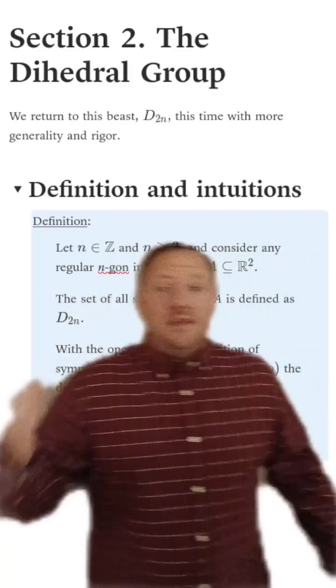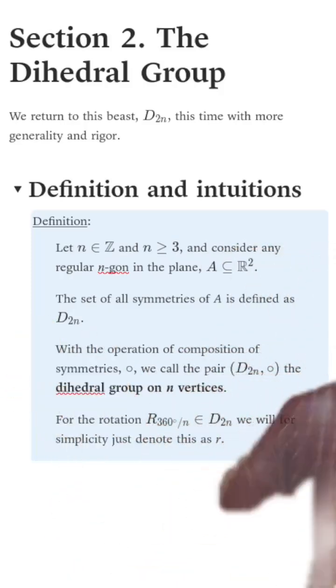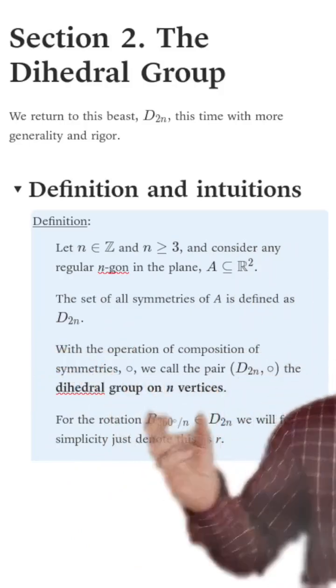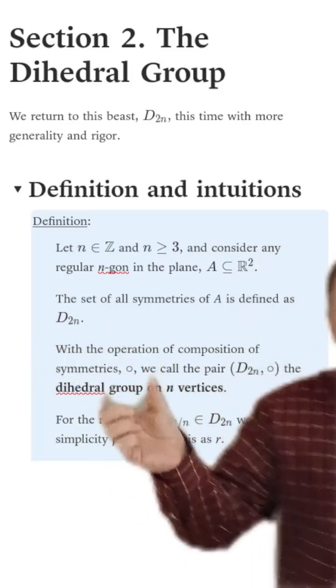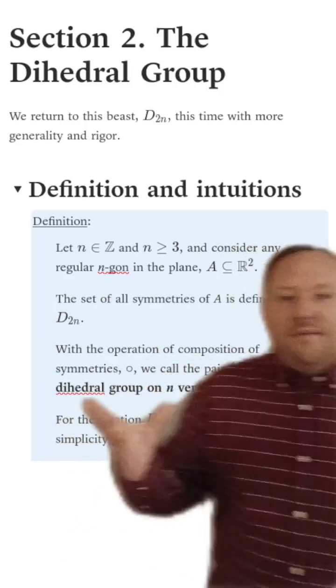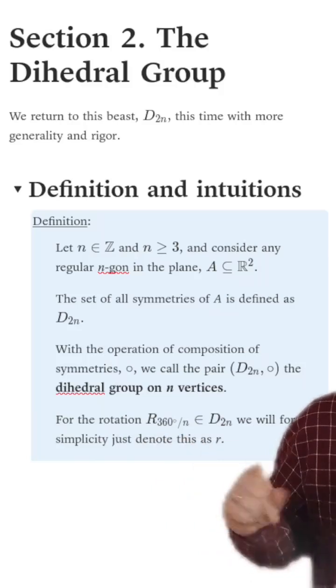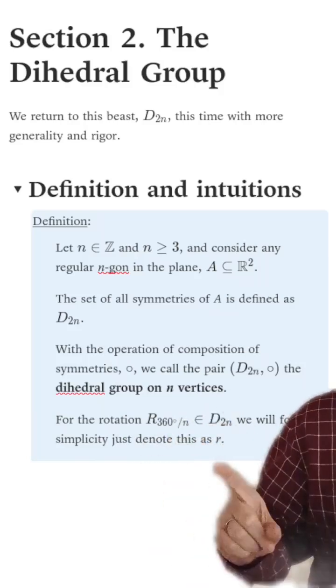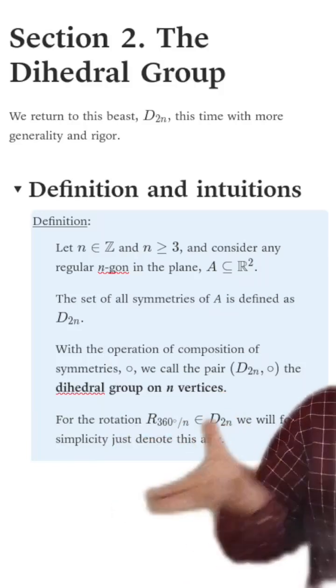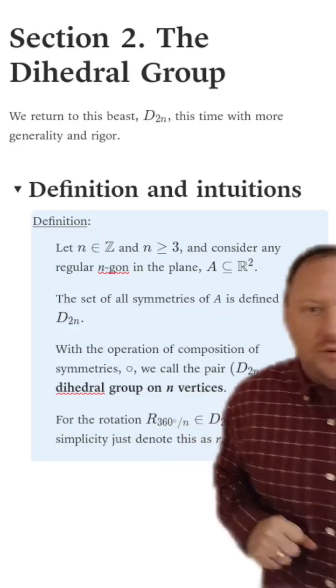The set of all symmetries is the dihedral group, denoted as D sub 2n. The operation on this set is composition of symmetries, denoted by the circ symbol. We previously had notation like big R sub angle measure, but we'll now just use the symbol r, where we understand what that means by knowing how many vertices there are. It's the smallest counterclockwise rotation.